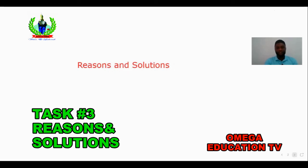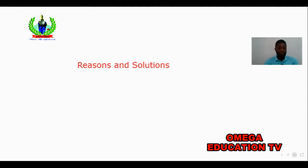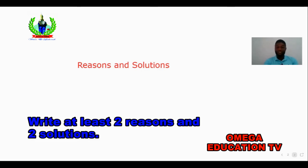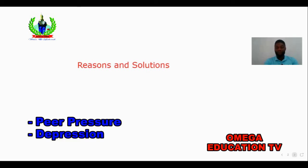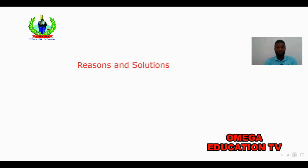The next essay type is reasons and solutions, which is similar to advantages and disadvantages. When writing a reasons and solutions essay, you give two reasons why a particular situation occurs, then you give two solutions to that situation. Note carefully: the solutions are not solutions to the reasons, but solutions to the central idea of the prompt. For example, if the question asks why tobacco consumption by young people is on the rise, and I give peer pressure as a reason, my solutions should not address peer pressure directly, but rather how the incidence of tobacco consumption by young people can be eliminated or reduced.